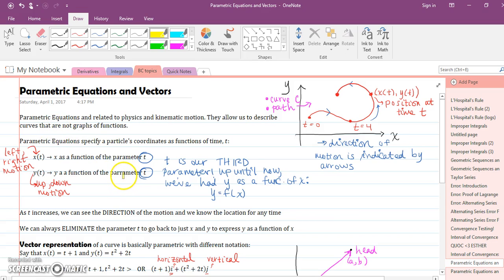Now parametric equations are all about motion. So you might have seen something similar to this in physics when you're talking about kinematic motion. If not, when you do classes in college related to mechanical engineering or anything related to physics, you're going to see parametric motion. The main reason for parametric equations is to describe motion, because it gives you direction, not just a graph.